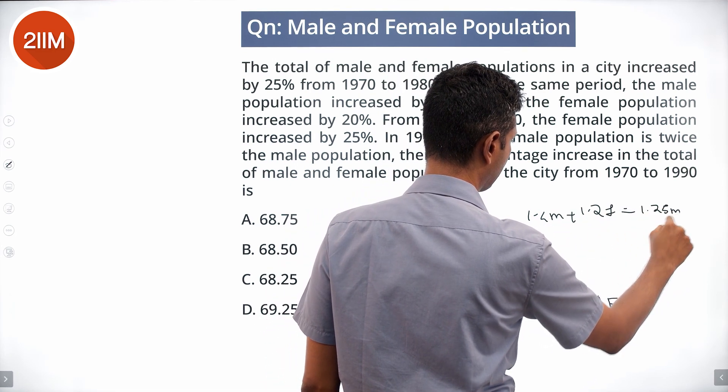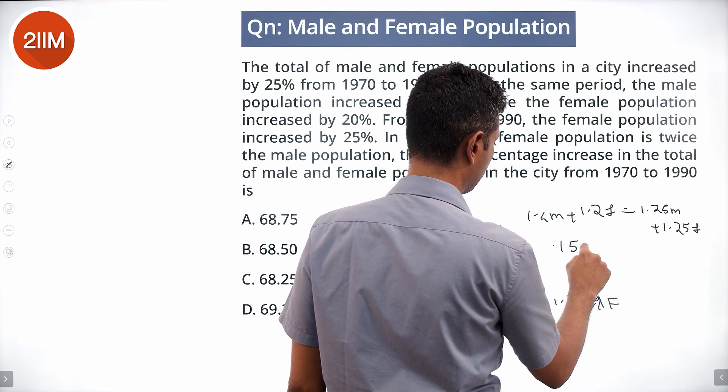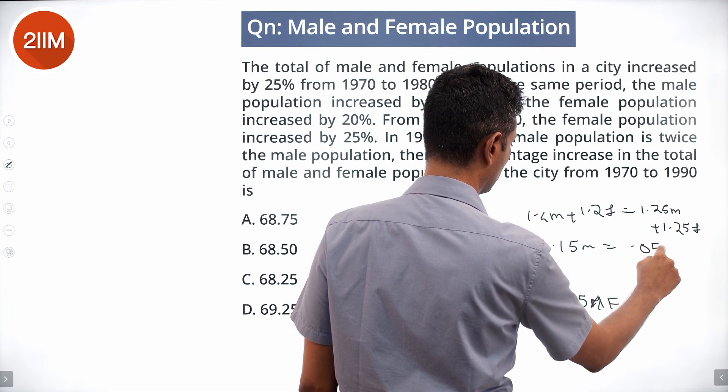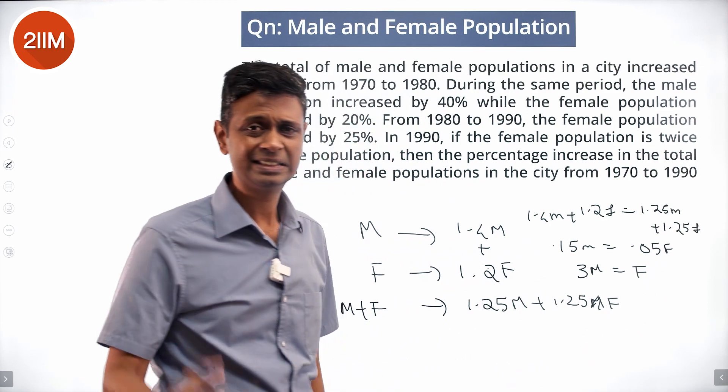Or 0.15M equals 0.05F, so 3M equals F. The number of females is thrice the number of males.